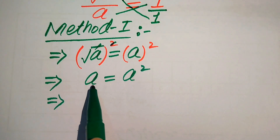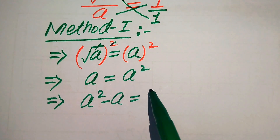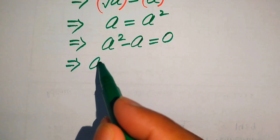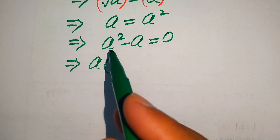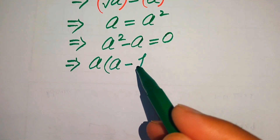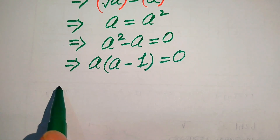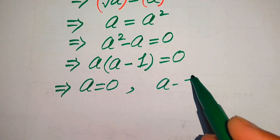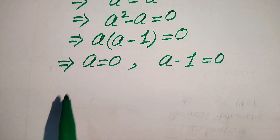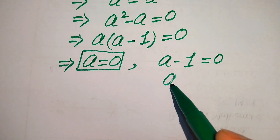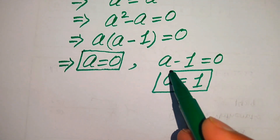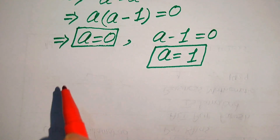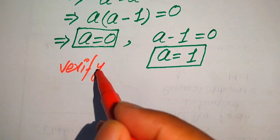In the next step we move a to the right hand side, giving a squared minus a equals 0. Both terms involve a, so we factor out a, getting a times (a minus 1) equals 0. This splits into two cases: a equals 0 (first root) and a minus 1 equals 0, so a equals 1 (second root). Now we need to verify which of these roots are solutions and which are extraneous.